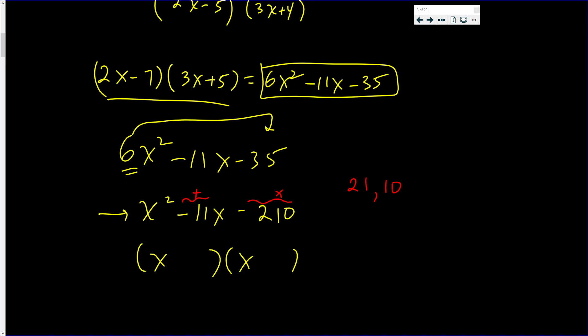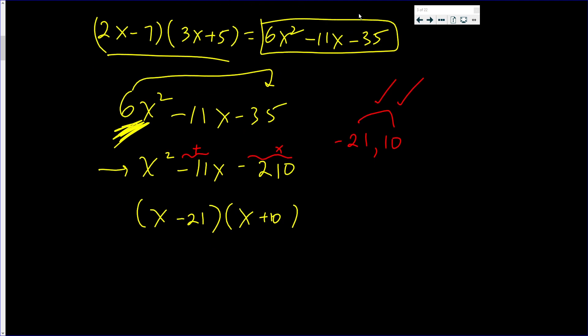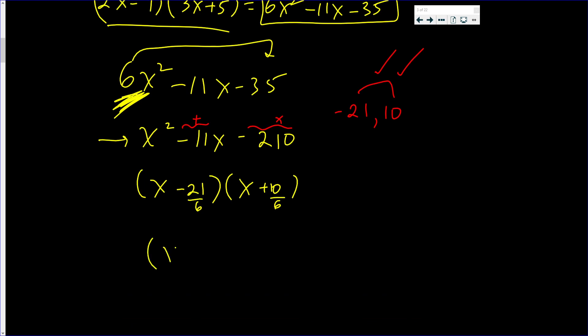So negative 11. So how about we do that? These two numbers, they multiply out to negative 210, and they add up to negative 11. So minus 21 and plus 10. Then we divide by the coefficient of x² from the beginning problem that we're trying to factor. But we only divide the constant by this. And then we reduce, looks to me like 7 halves.